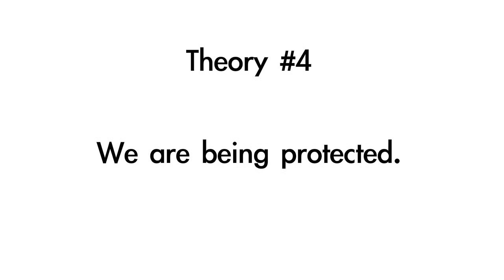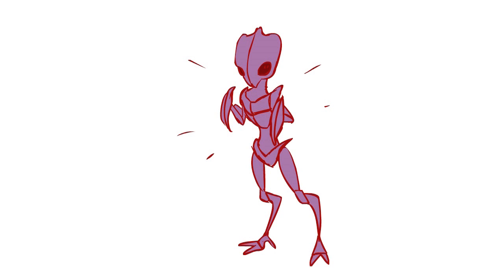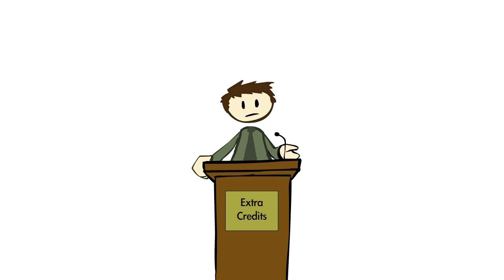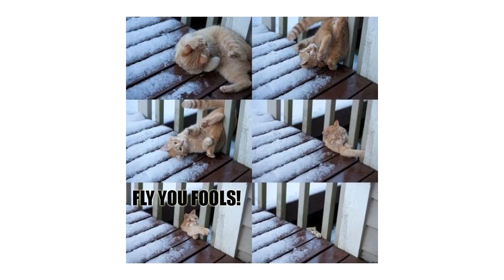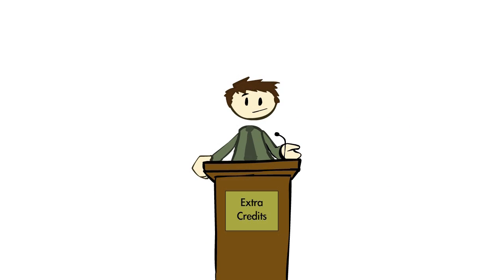Number four, we are being protected. Often called the prime directive hypothesis. It states that other civilizations exist and are all around us but are shielding us from the knowledge of their existence. Given how we've tried to do this with a small number of tribes in the Amazon and periodically fail spectacularly due to the whims of a few people or even a simple accident, I'm skeptical but who knows.